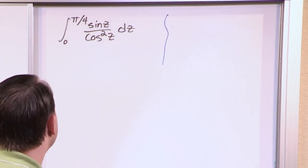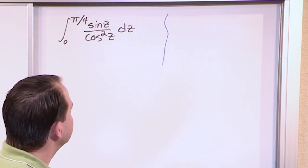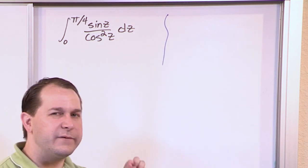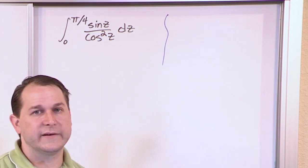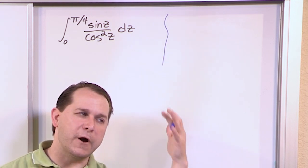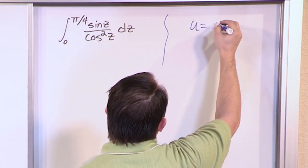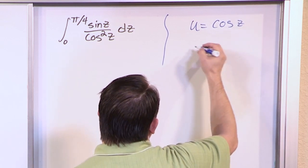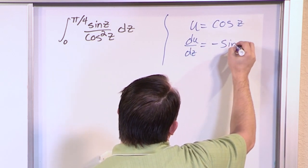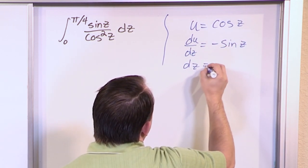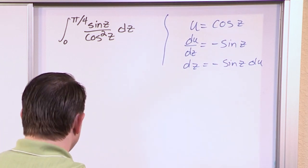We notice cosine squared on the bottom. If we choose u equal to cosine of z, then the derivative of cosine is negative sine — and that sine might cancel with the sine on top. So let u equal cosine of z, du/dz equals negative sine of z, and solving for dz gives negative 1 over sine z, du.